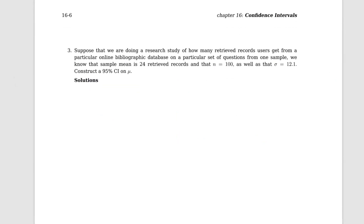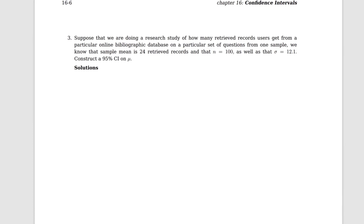Now suppose we are doing a research study on how many retrieved records users get from a particular online bibliographic database. We know the sample mean is 24, so x-bar equals 24. The sample size n equals 100, and the population standard deviation sigma equals 12.1.